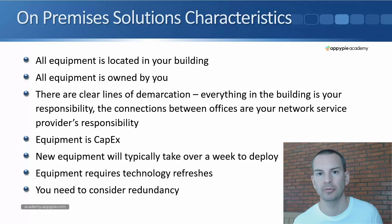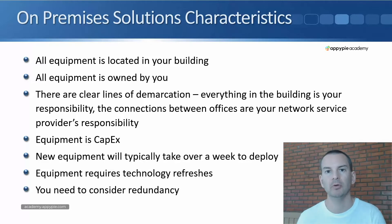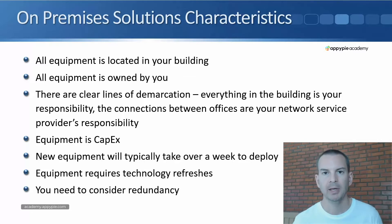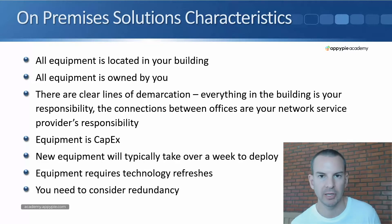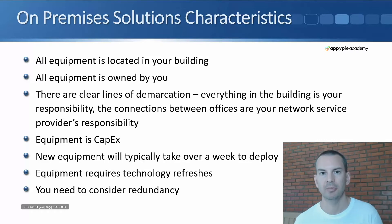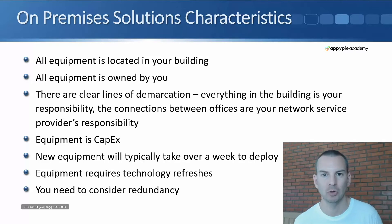Unless you've only got one office and you're a very small company, you're going to have multiple offices and you're going to want to have connectivity between those offices. All of the equipment in the offices is owned by you and is your responsibility, but the network connections between your offices are going to be the responsibility of your network service provider. All of the equipment in your offices has to be paid for upfront, so you've got that one-time upfront fee — it's a capital expenditure cost.